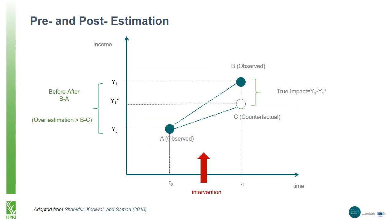If we return to the graphic we saw earlier, we can see this overestimation. If we used y0 and y1 as our pre and post measurements of income, we would be overestimating the change in income due to the program. The participants would have reached the income at y1-star without the extension program. The impact of the extension program is only the difference between points B and C.